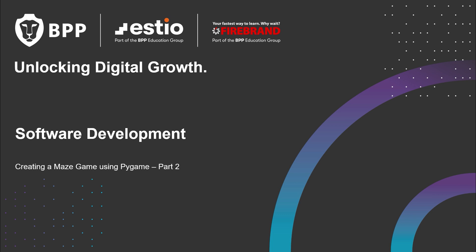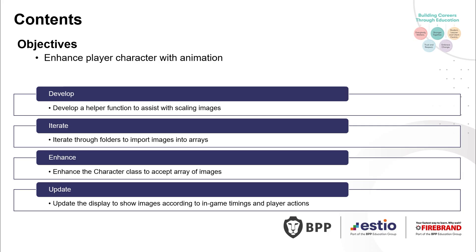Welcome to part two of the six-part series looking at how to create a maze game using PyGame. In this part, we are going to develop a helper function to assist us with scaling images, iterate through a series of folders allowing us to input images into arrays, enhance the character class to allow it to accept that array of images, and update the display to show the images according to the timings within the game and also to the actions you take as a player.